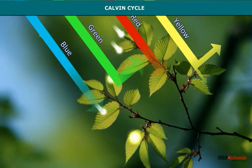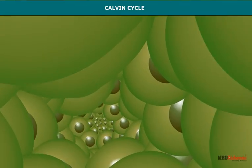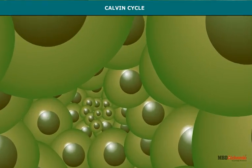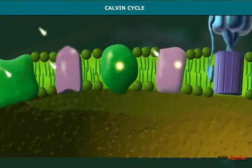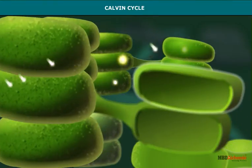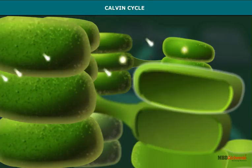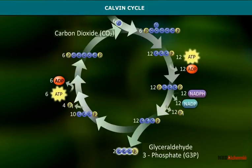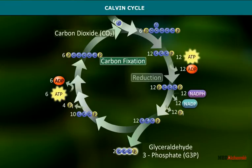The Calvin Cycle consists of a series of reactions that reduce carbon dioxide to produce the carbohydrate glyceraldehyde-3-phosphate. The cycle consists of three steps: carbon fixation, reduction, and regeneration.